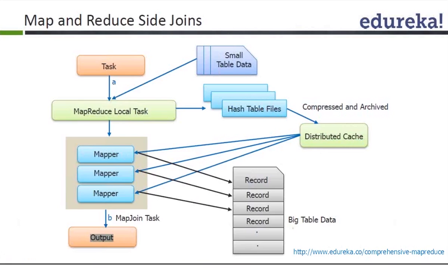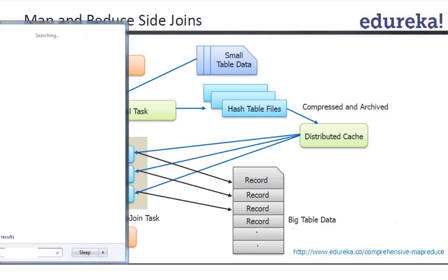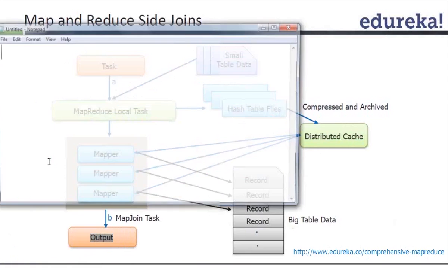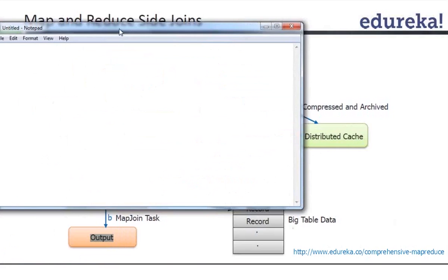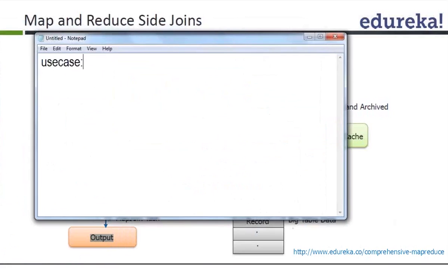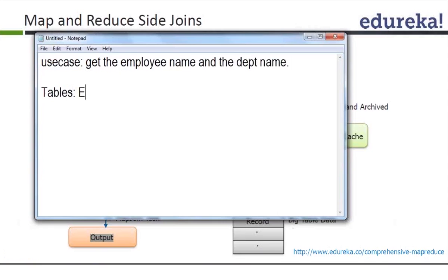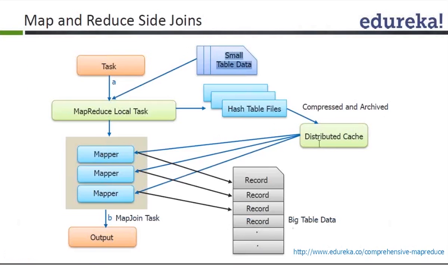For example, if you want to join an emp table and a dpt table in Oracle to get employee name and department name, the dpt table would be the smaller one and would go into the distributed cache. If both tables are large, then there is another technique called a reduce-side join.